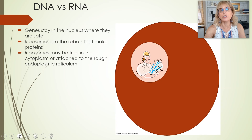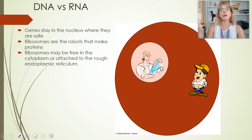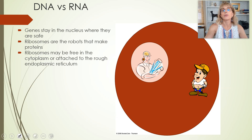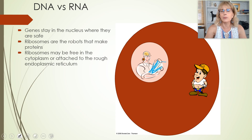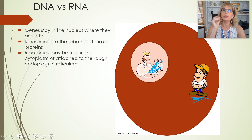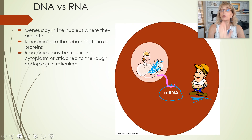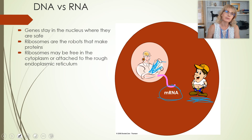Think of it this way: the nucleus has all the instructions for making everything that is you. Along comes Mr. Ribosome, reporting for work, asking what to do today. The nucleus does not hand over all the blueprints for the entire factory complex — she just wants this guy to install the paper towel dispensers. So she makes a copy of just that one gene in the form of messenger RNA and hands it to him. The DNA is meant to be permanent and stays in the nucleus where it's safe. The messenger RNA is meant to be temporary — if it gets crumpled up at the end of the day, it doesn't matter. We'll just make a new one next time.